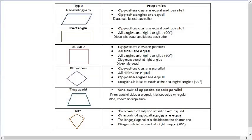One pair of opposite angles are equal. See, this angle and this angle are equal. The longer diagonal of a kite bisects the shorter diagonal. Means this diagonal longer bisects the shorter diagonal. So, remember these four points for a kite.